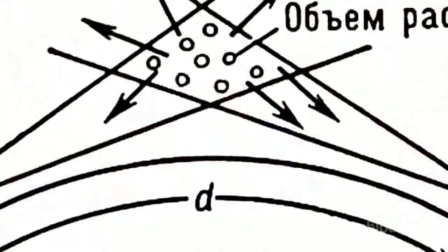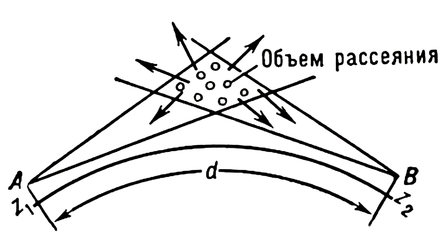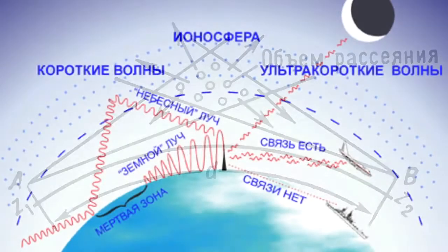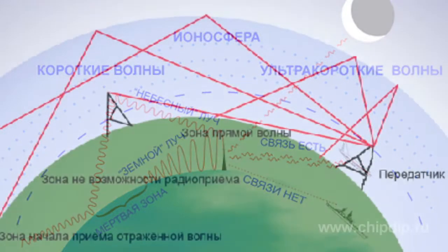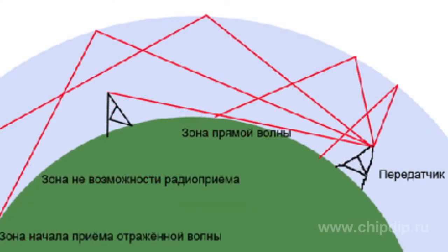The troposphere is the part of the atmosphere located below the ionosphere. It may have areas of air with different temperature and atmospheric pressure, all with sharp boundaries. Due to this, high-frequency radio waves can reflect from these areas back to the Earth, and radio communication can be established at a distance of several hundred kilometers.